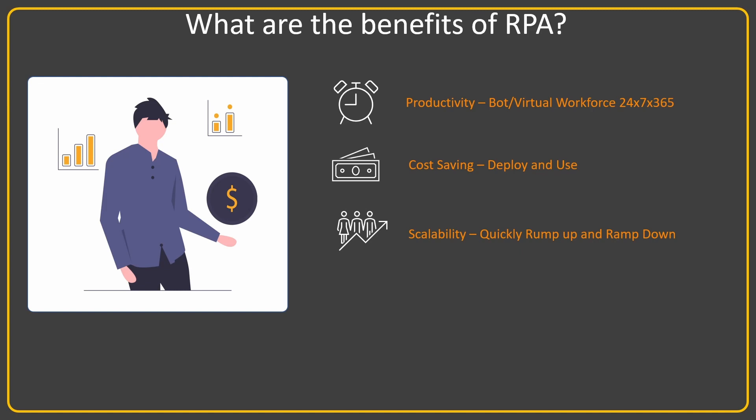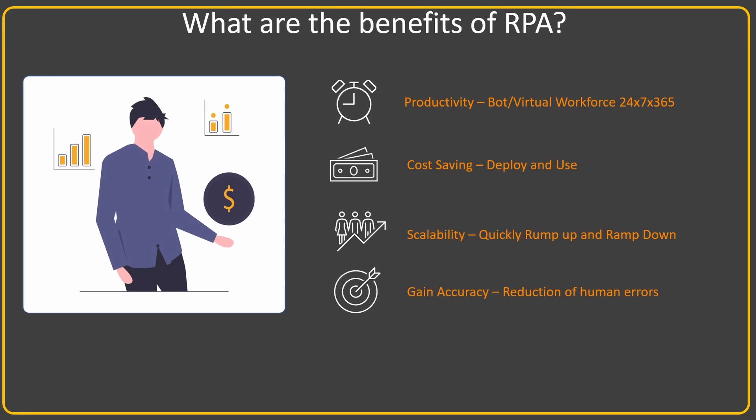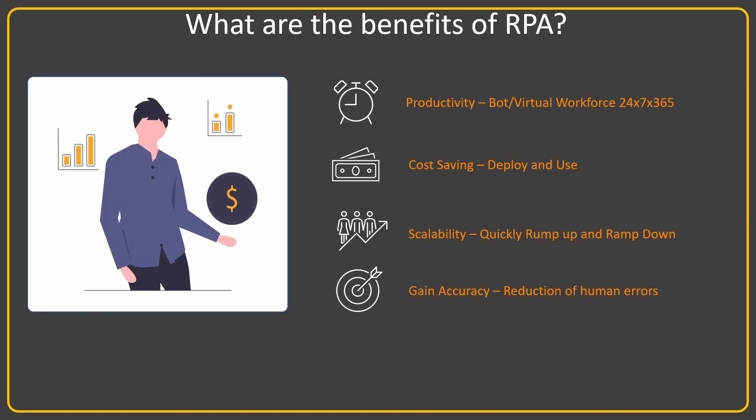Another key benefit of RPA is scalability — you can ramp up or down. It's just a matter of adding a couple of servers or compute to the bot; it just ramps up if demand is high or your workload is at peak. It can also achieve very high accuracy because it is undistracted and reduces all human errors. These are some of the benefits of RPA.